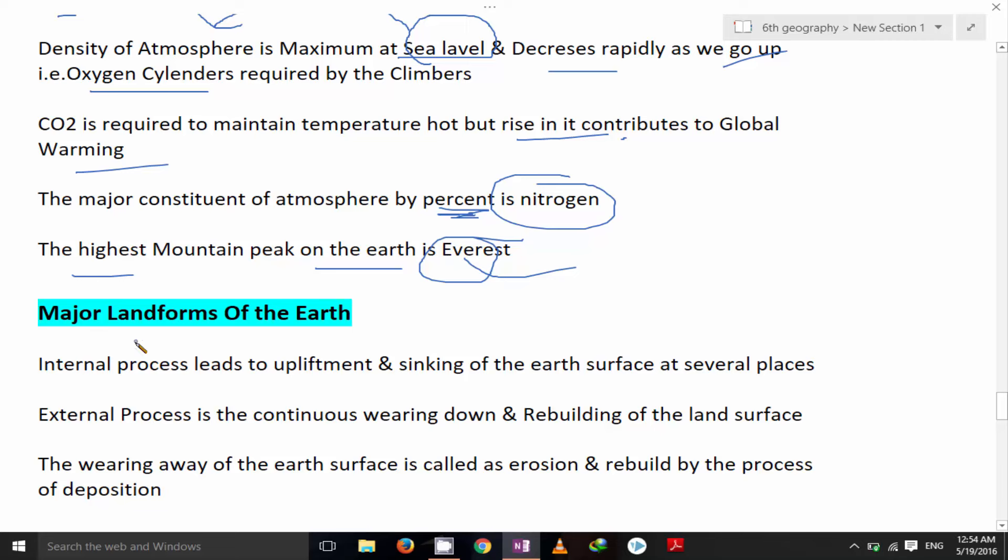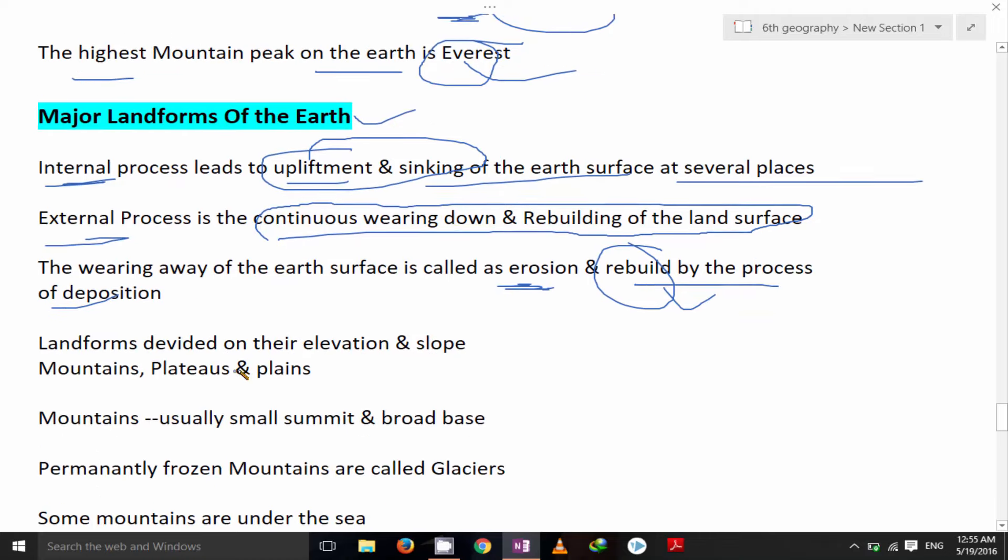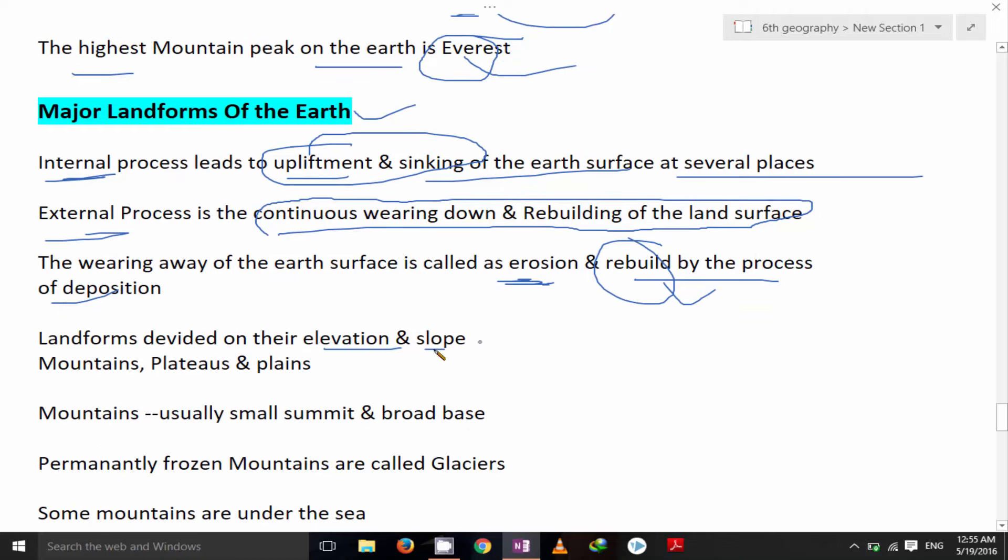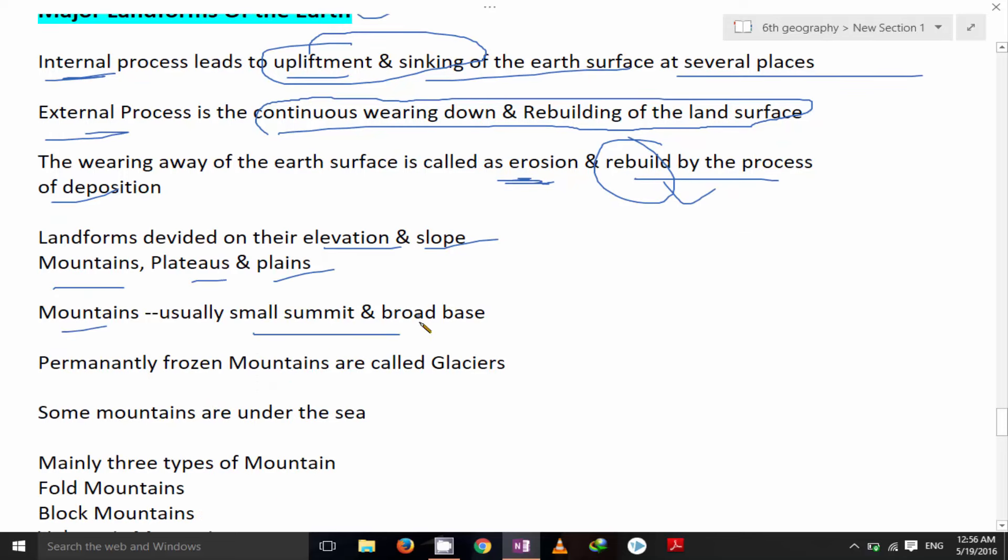Major landforms of the earth. Internal process leads to upliftment and sinking of the earth surface at several places. External process is the continuous wearing down and rebuilding of the land surface. The wearing away of the earth surface is called erosion and rebuilding is by the process of deposition. Landforms divided on their elevation and slopes: mountains, plateaus and plains. Mountains usually small summit but broad base and are too high.